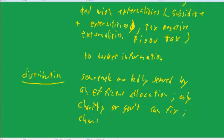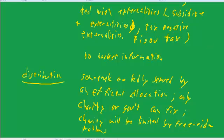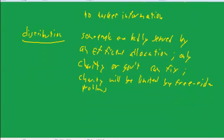So only charity or the government can fix this. But charity will be limited by free rider problems. If you have a bunch of poor people and two rich people, each rich person could say they want the other rich person to take care of the poor, and free ride on that. So the only way to get both rich people to donate is to use coercion — have the government tax them in order to do that. So there's this distribution function.